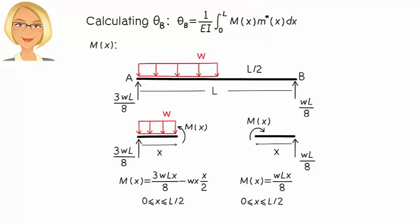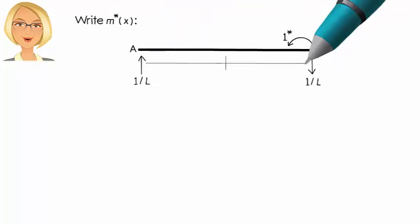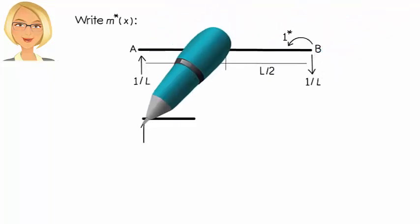But to determine M star x, this time we're going to place the unit moment at B, like this. Then, the moment equation for the beam can be written as...